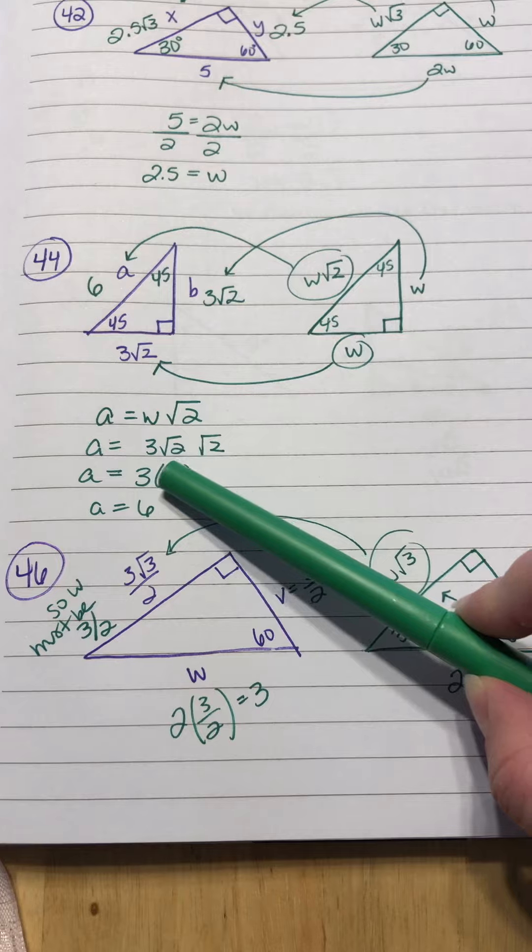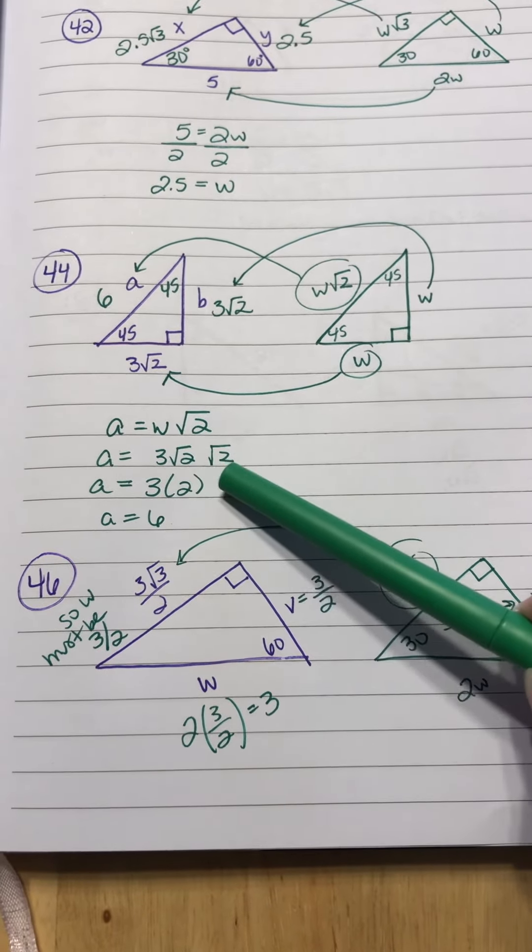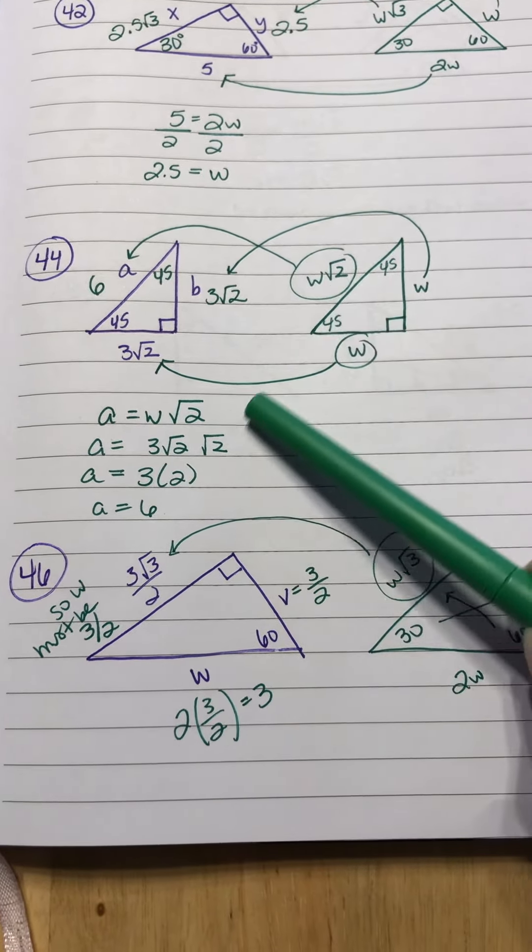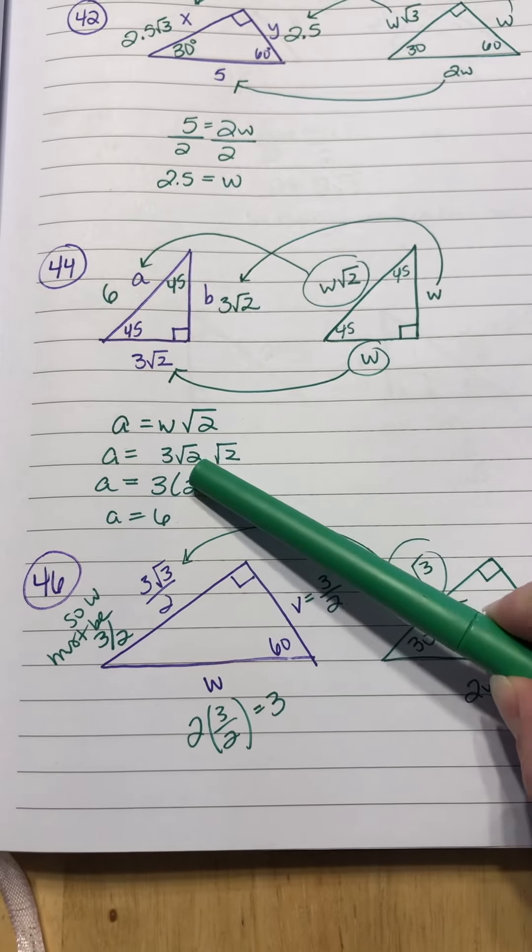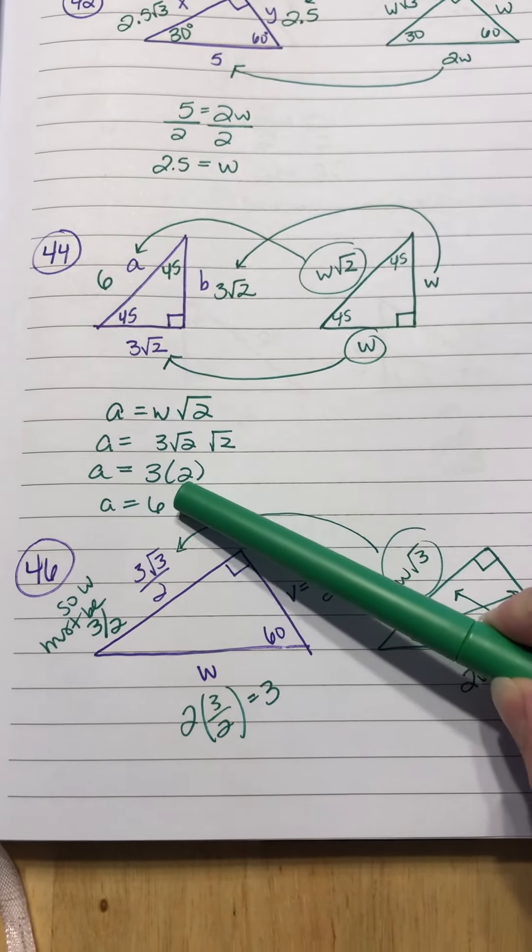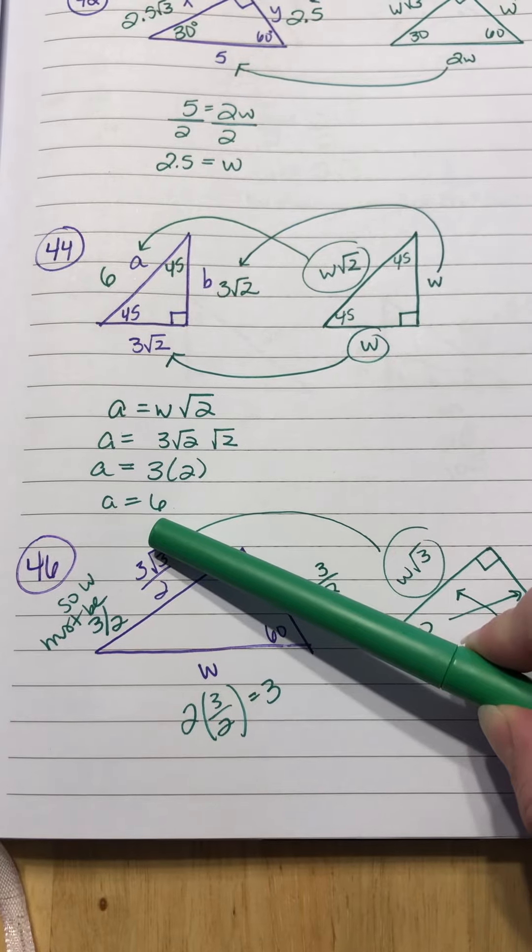You're just going to write W, so 3 square root of 2, and then another square root of 2, because that's what you need for the hypotenuse. Square root of 2 times square root of 2 is just 2. 3 times 2 is 6, so that's your hypotenuse.